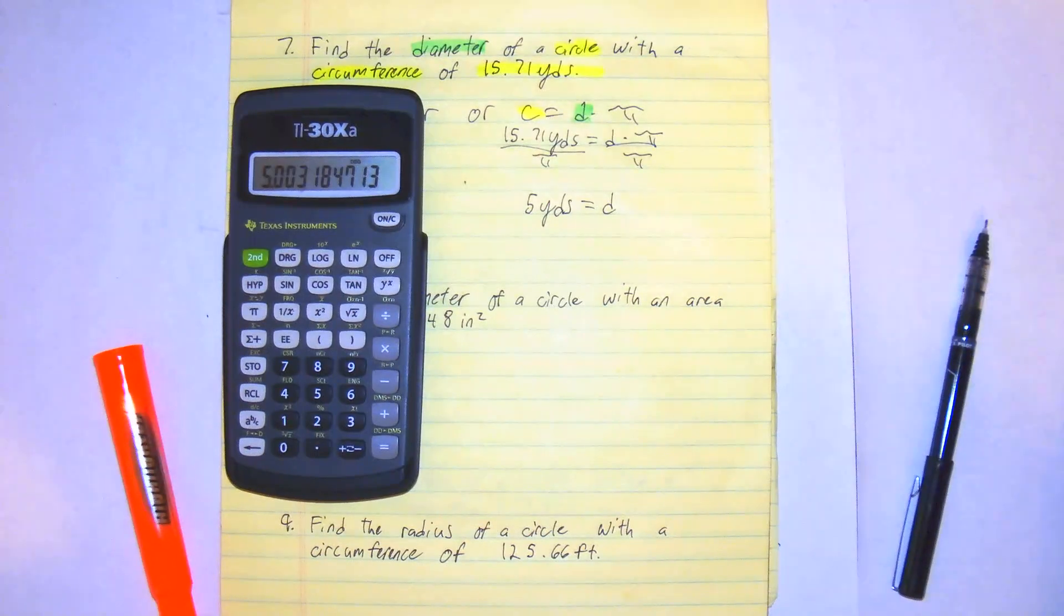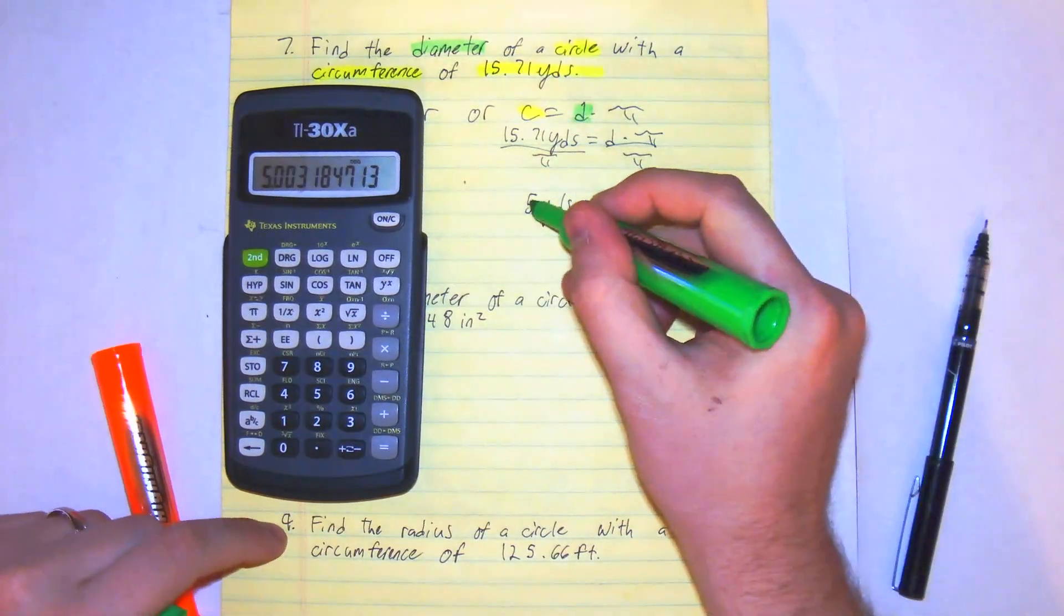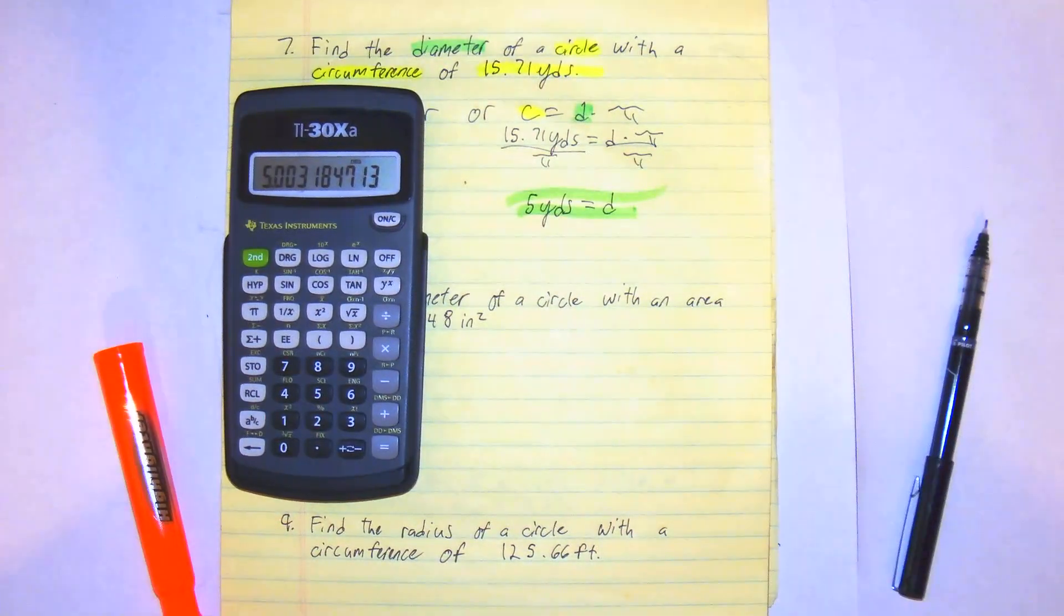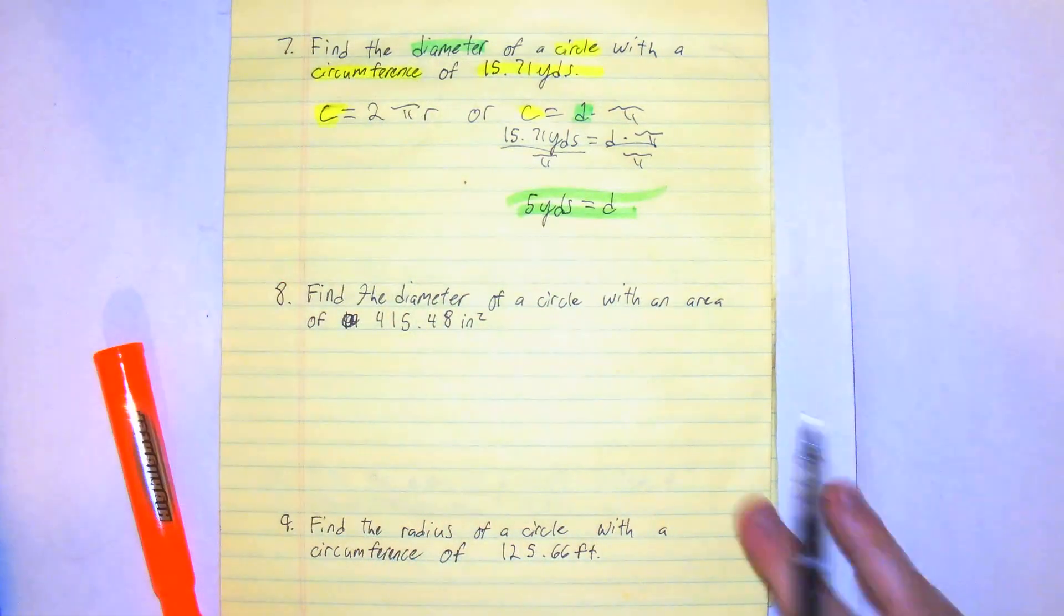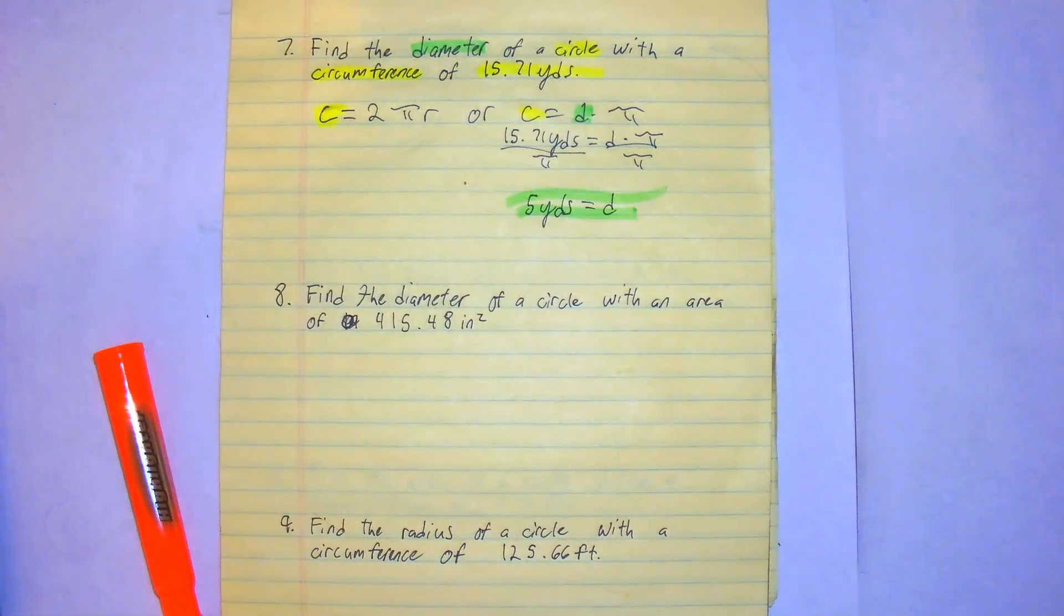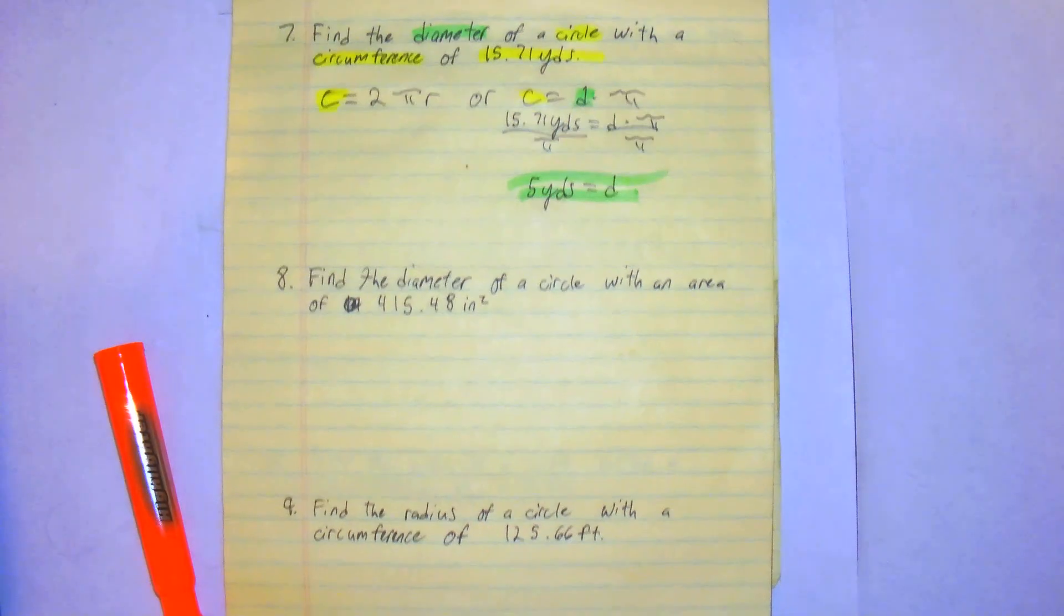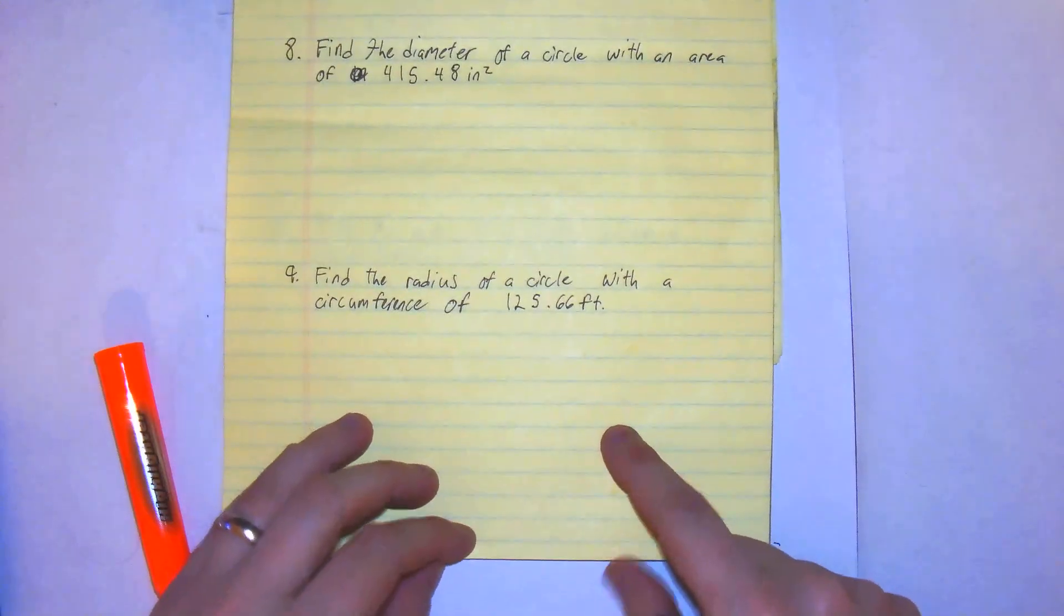So we found the value of our diameter, the answer for number 7. And that's how you do number 7. Number 8.